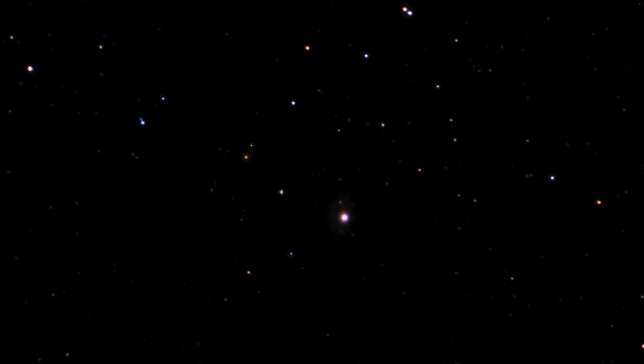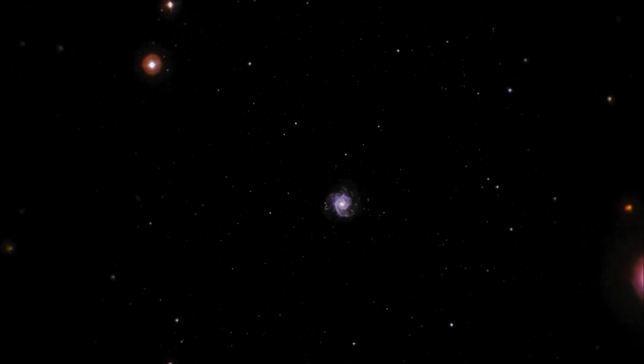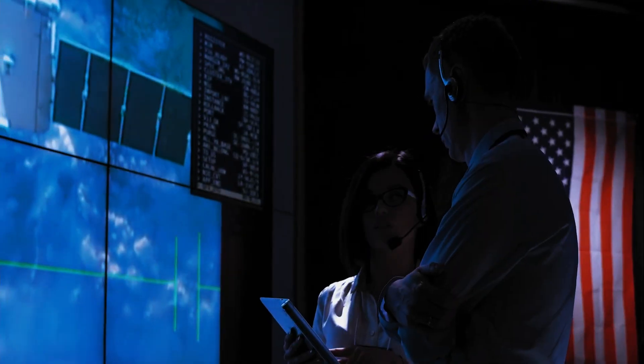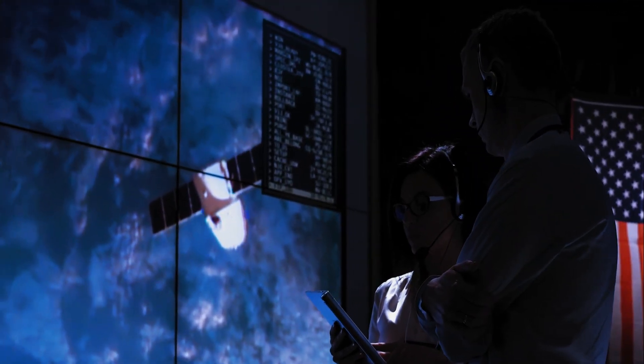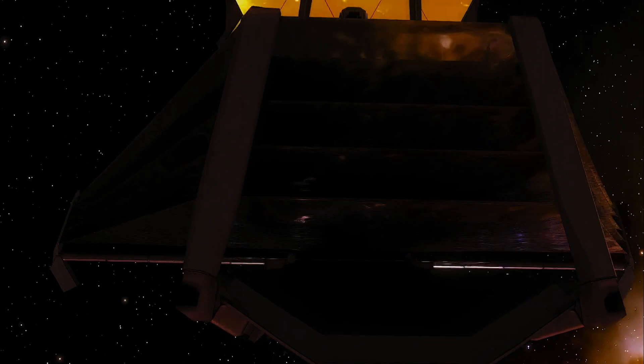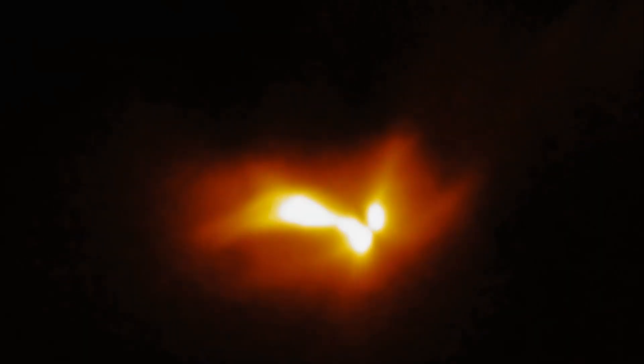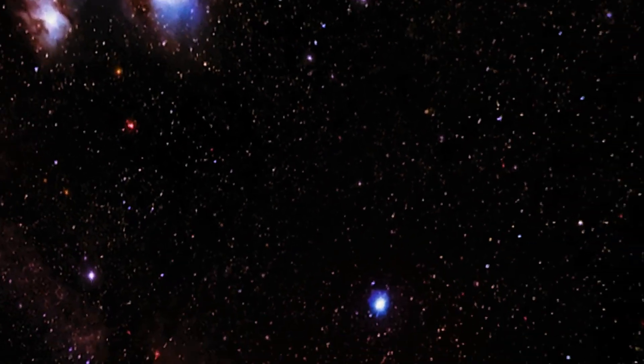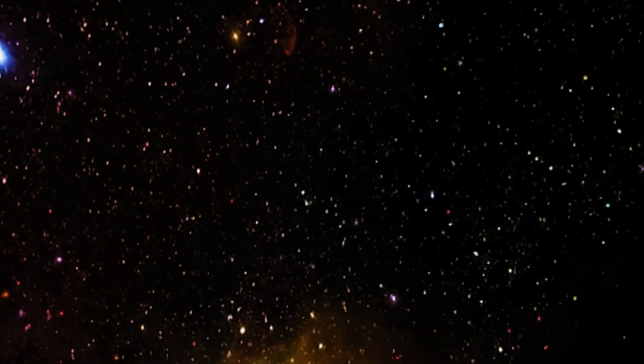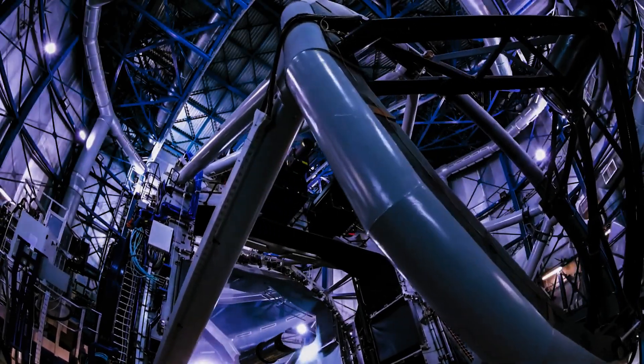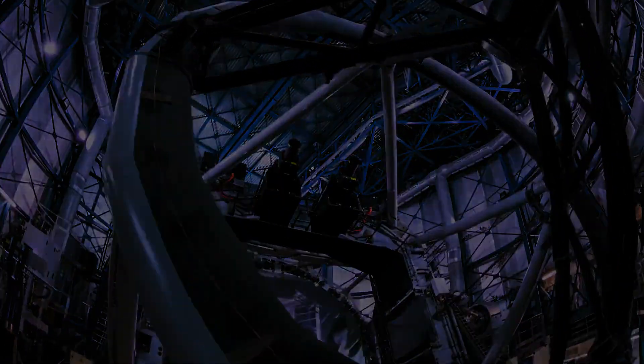Studying this faint intracluster light required more than the sheer observing power of the JWST, however, meaning the team also needed to develop new image analysis techniques. In this work, we needed to do some extra processing to the JWST images to be able to study the intracluster light, as it is a faint and extended structure, Montes explained in the statement. That was key to avoid biases in our measurements.